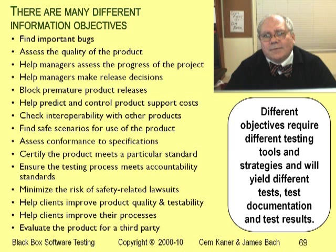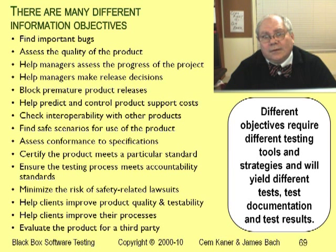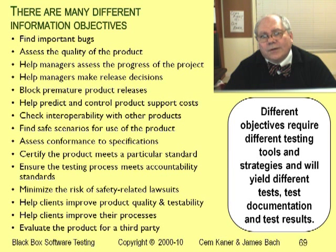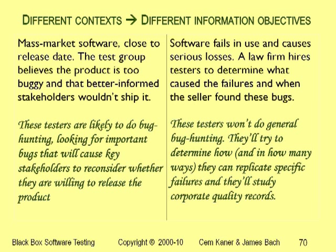Stakeholders don't all have the same information needs. They differ across projects and across people within the same project. For example, the salespeople might ask you to develop a pre-release demo script for a product. This isn't about looking for bugs — everybody knows the product doesn't fully work yet. But the salespeople need safe scenarios that let them avoid the bugs while showing what the product will be able to do. They come to you because you understand the bugs and have insight into how to work around them. The type of testing you do will depend on the types of information your stakeholders need.